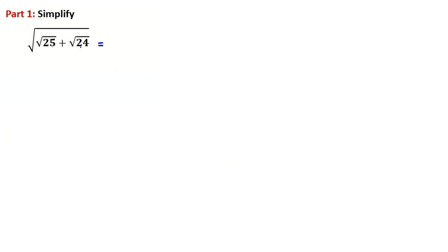For this problem, we have √(25 + √24). We can write √24 as √(4×6). Then we can write it as √(25 + 2√6).